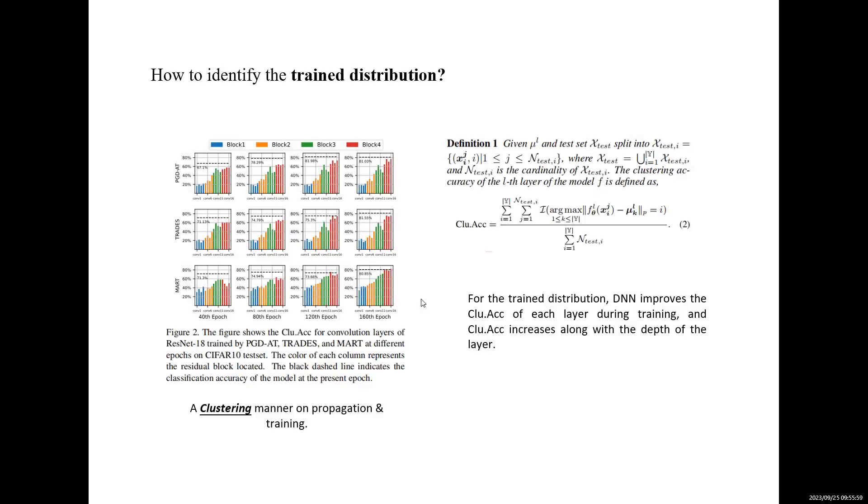The next question is, does there exist a distribution adversarial training cannot approach? And how to identify the trained distribution?